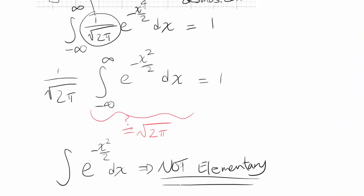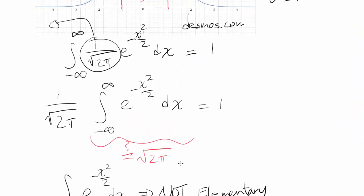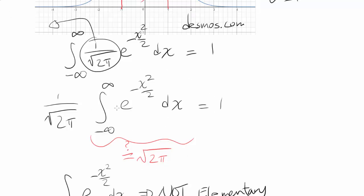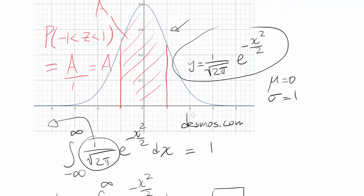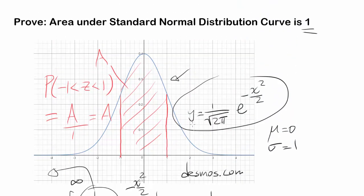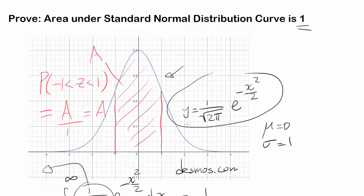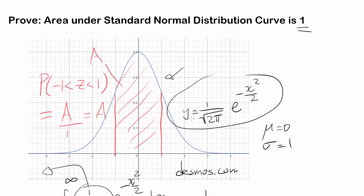Going back to our original expression, we know the integral of e to the negative x squared over 2 equals the square root of 2π. So the area under the curve is 1 over the square root of 2π times the square root of 2π, which equals 1. The area under the standard normal distribution curve is exactly 1.